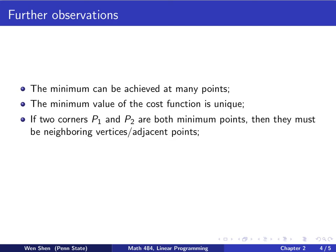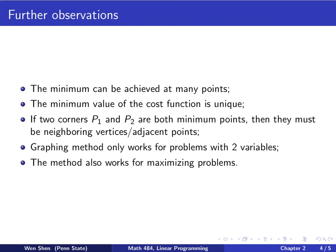If you shall find two points, let's call them P1 and P2, they are both minimum points, then they must be two neighboring vertices, we call them adjacent points of your feasible region. So these are the observations we have made by using the graphing method, and we also recognize the restriction of this graphing method. That is, it can only work for problems with two variables, because if we have more, like five, six variables, we will not be able to graph them.